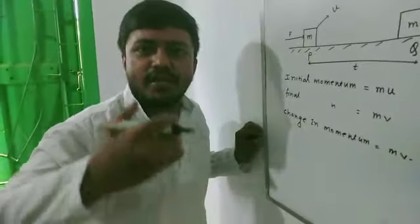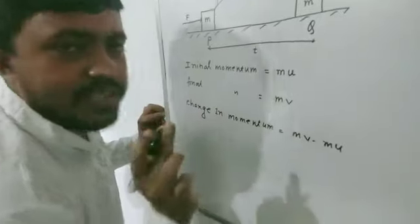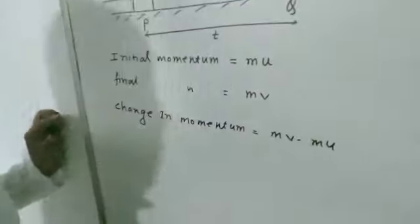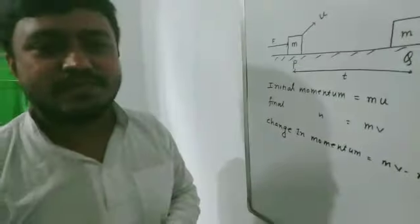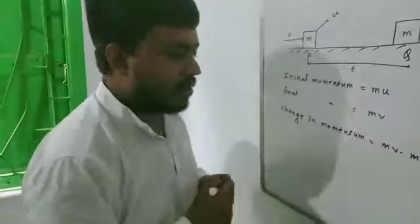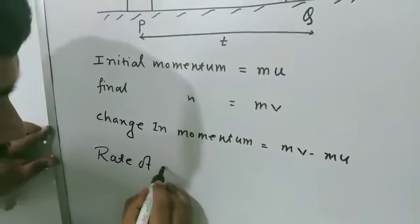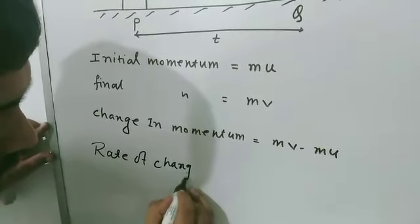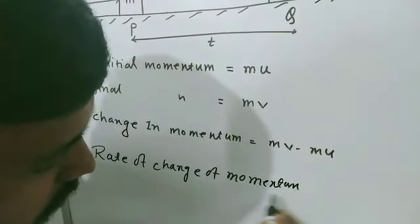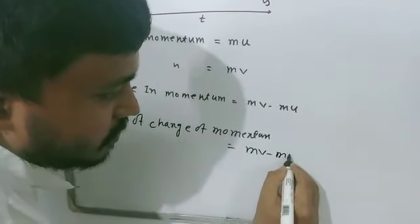Change in momentum always means final minus initial. So change in momentum equals Mv minus Mu. Now, this change in momentum takes place over time T. So the rate of change of momentum is: (Mv − Mu) / T.